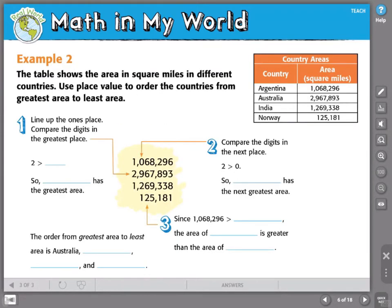Here's another example, and they were so kind to already line this up by their place values here for us. We're going to find the area in square miles of different countries. We're going to use place value to order them from greatest area to least area. This is another one of those questions you need to make sure you are very carefully reading, so that when you write your answer, you are putting your numbers in the order that the question has asked for.